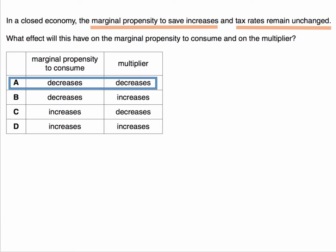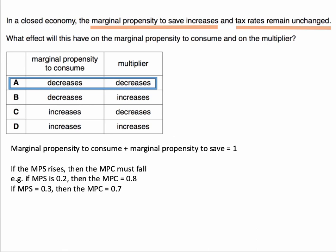The marginal propensity to consume will fall and the multiplier will decrease as well. The marginal propensity to consume plus the marginal propensity to save must always equal 1. Any change in income can either be spent or saved. If the MPS rises, then the MPC must fall. For example, if people are saving 20% and spending 80%, but the rate of saving goes up to 0.3, then the MPC must fall to 0.7 — people spending 70% of any gain in income.